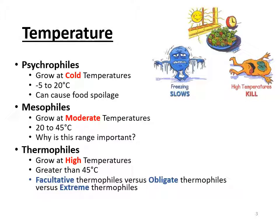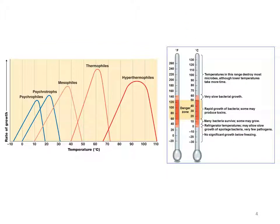The last subcategory is extreme thermophiles — if anything's extreme, that means crazy high. Extreme thermophiles you will find above 80 degrees Celsius. To help you visualize these, we have a figure on the next slide showing psychrophiles, mesophiles, and thermophiles in order. You also see a curve for hyperthermophiles, which are the extreme thermophiles we mentioned.